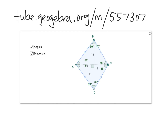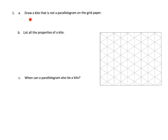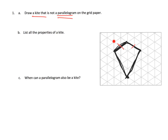You can go to GeoGebra dynamic software to play with a kite yourself. The directions say to draw a kite that is not a parallelogram. I'm going to make these two sides equal — two units and two units — connecting down to form the kite shape. We know it's a kite because this side equals this side, and this side equals this side, giving us two pairs of consecutive equal sides.